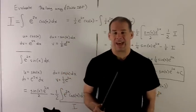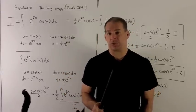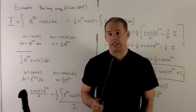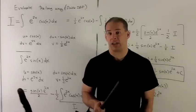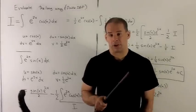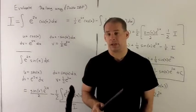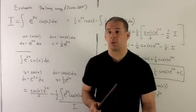What you need to know is that the final answer has e to the 2x cosine x and e to the 2x sine x in the final answer. And that's just a matter of figuring out how to get the coefficients. Here, we're just going to grind it out along the way.